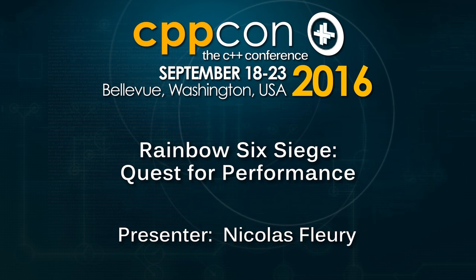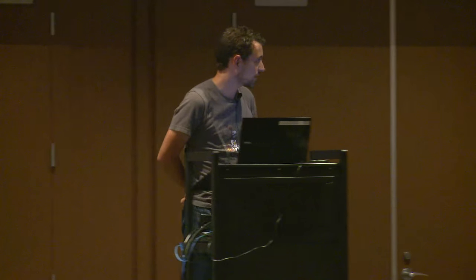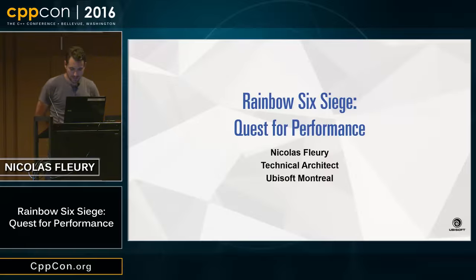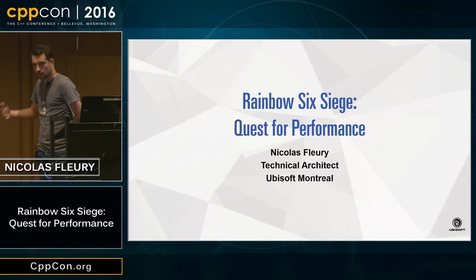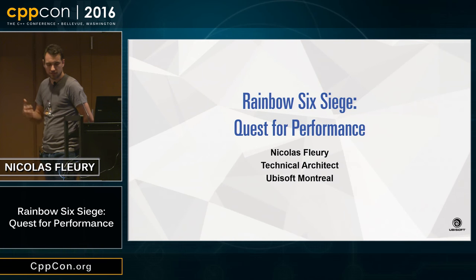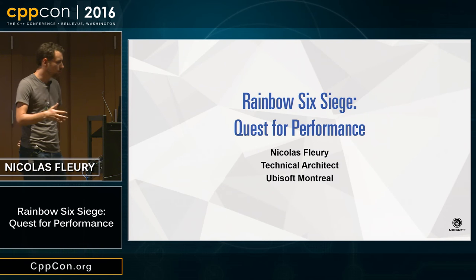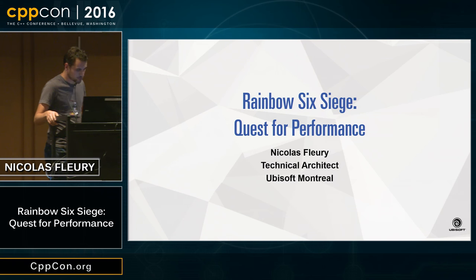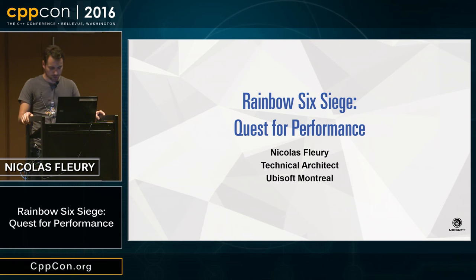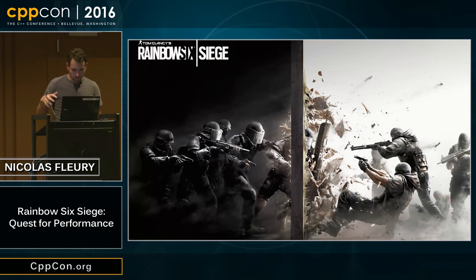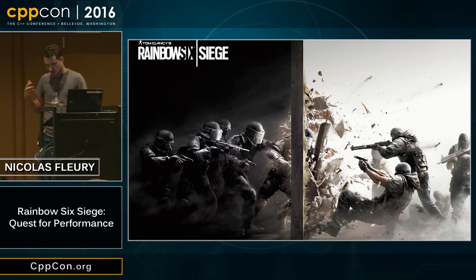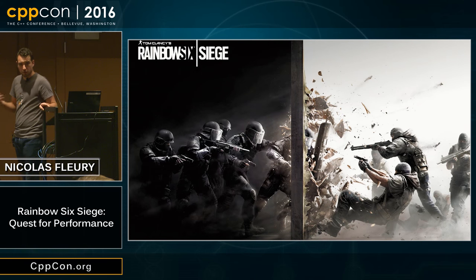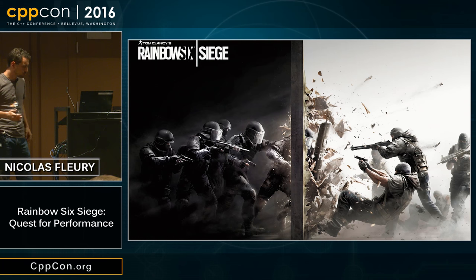Hi everyone. My name is Nicola Femme, a technical architect at Ubisoft Montreal. It's an honor to be with you today. Two years ago I made a talk at C++ about how we use C++ in the big AAA games we make at Ubisoft Montreal, but today I want to talk about the game I've been working on for four years now, which is Rainbow Six Siege.